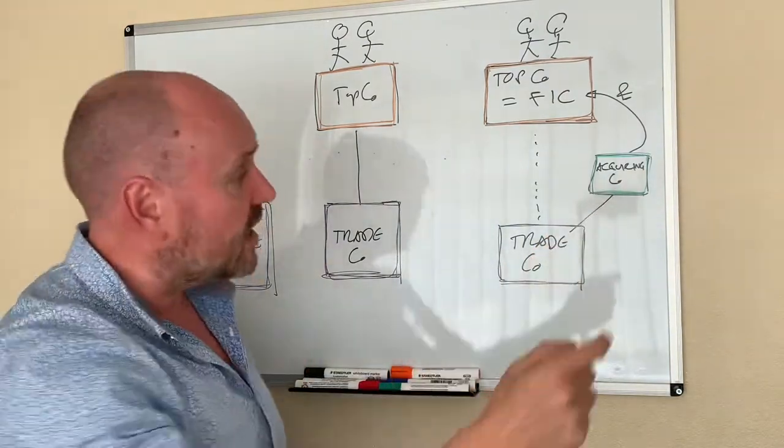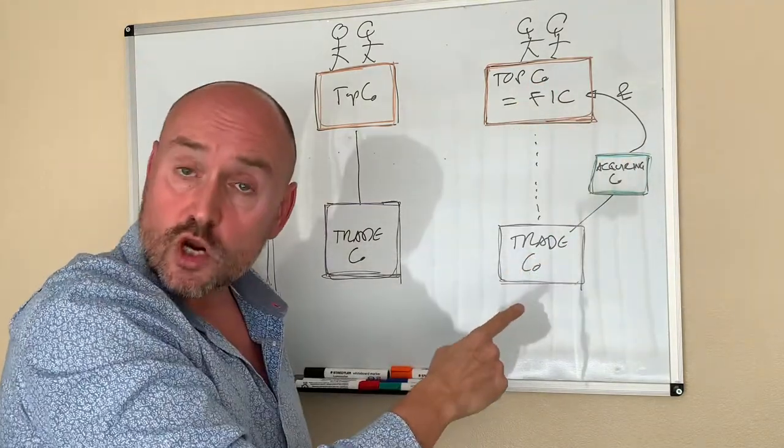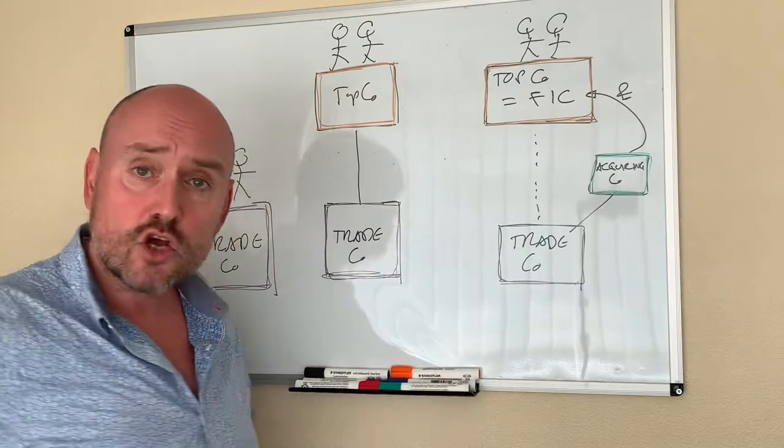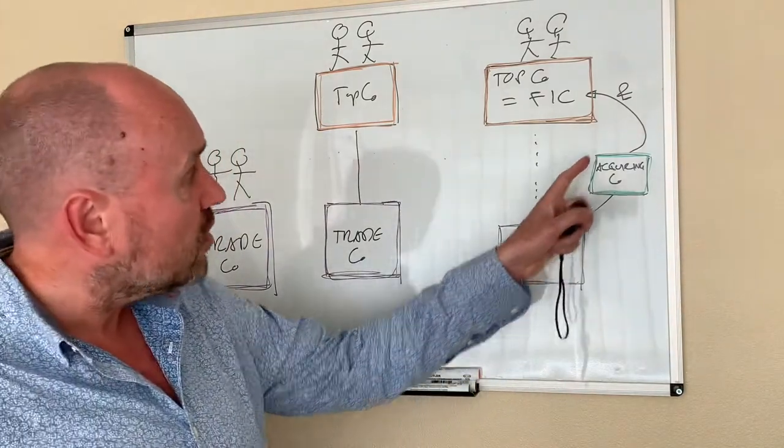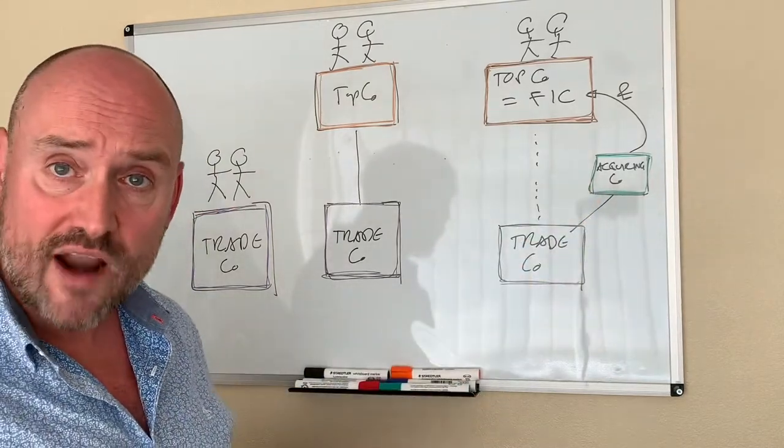So the buyer has a limited company. And what happens is that the buyer will pay the funds to the TopCo to acquire the shares in the trading co. So money's coming to TopCo and TradeCo goes off to the acquiring company.